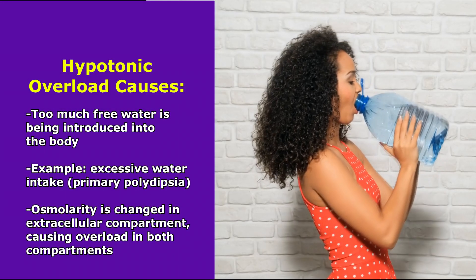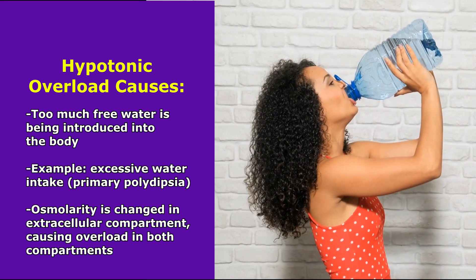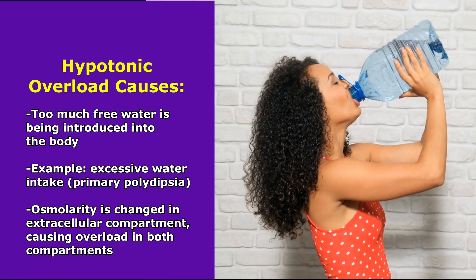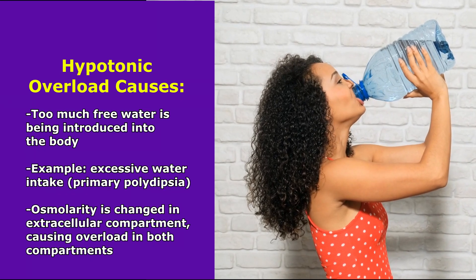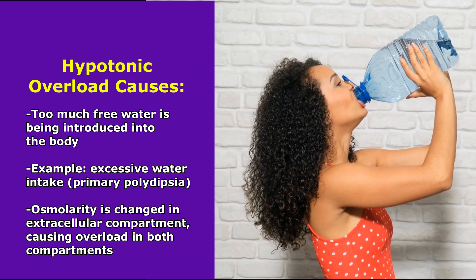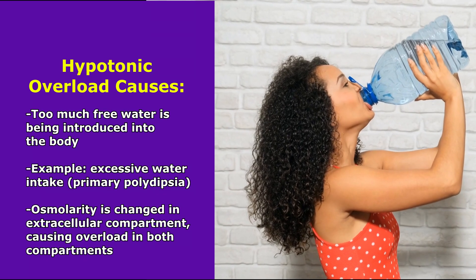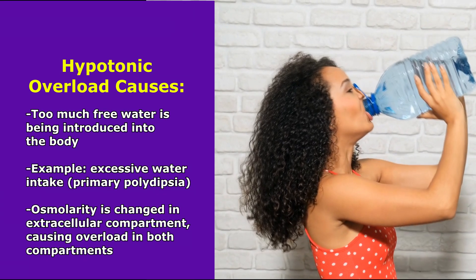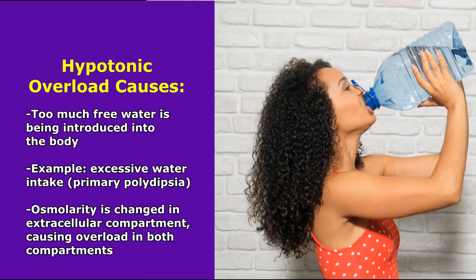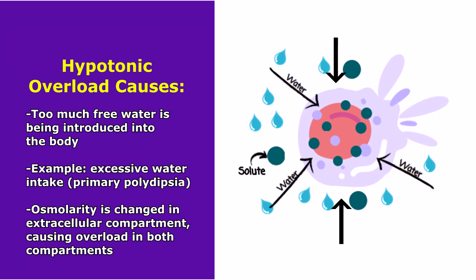When thinking of the causes, think of situations where free water is just being introduced into the body. One way is through excessive intake of free water orally — a condition called primary polydipsia, where the patient has a very strong compulsion to keep drinking water. As they introduce all this water, they become water intoxicated, which dilutes the extracellular compartment and, via osmosis, pulls water into the intracellular compartment as well.